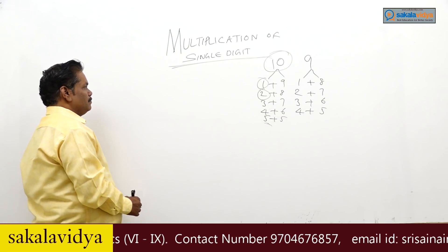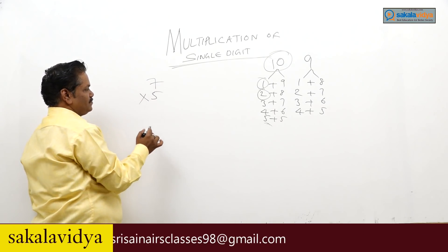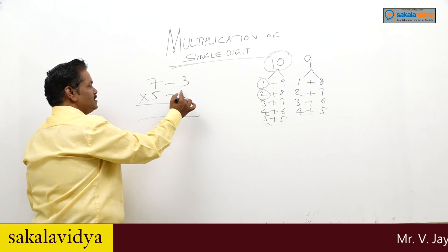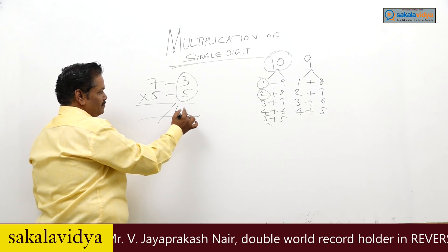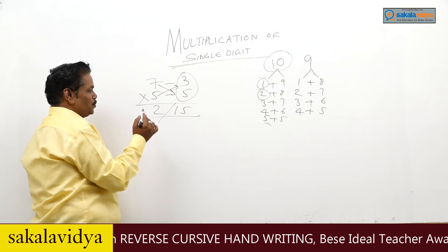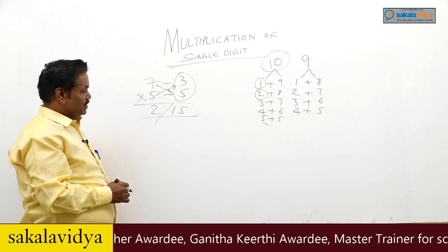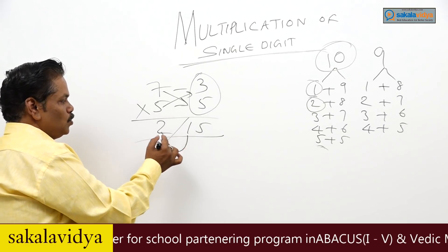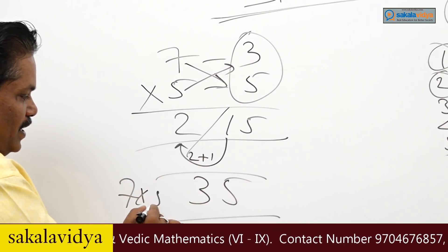Let's see some more examples: 7 into 5. Complement of 7 is 3 and complement of 5 is 5. Multiply the units: 5 into 3 is 15. And 7 minus 5 is 2, or 5 minus 3 is 2. We have a 2-digit units result, so we add the carry 1 to the tens: 2 plus 1 is 3. So 7 into 5 is 35.